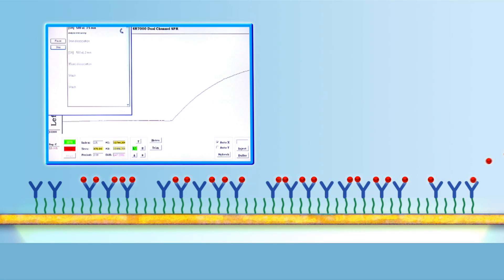Next, the buffer flows over the surface and a signature decrease in signal response is detected, as the analyte dissociates from the sensor surface. This is the dissociation phase.